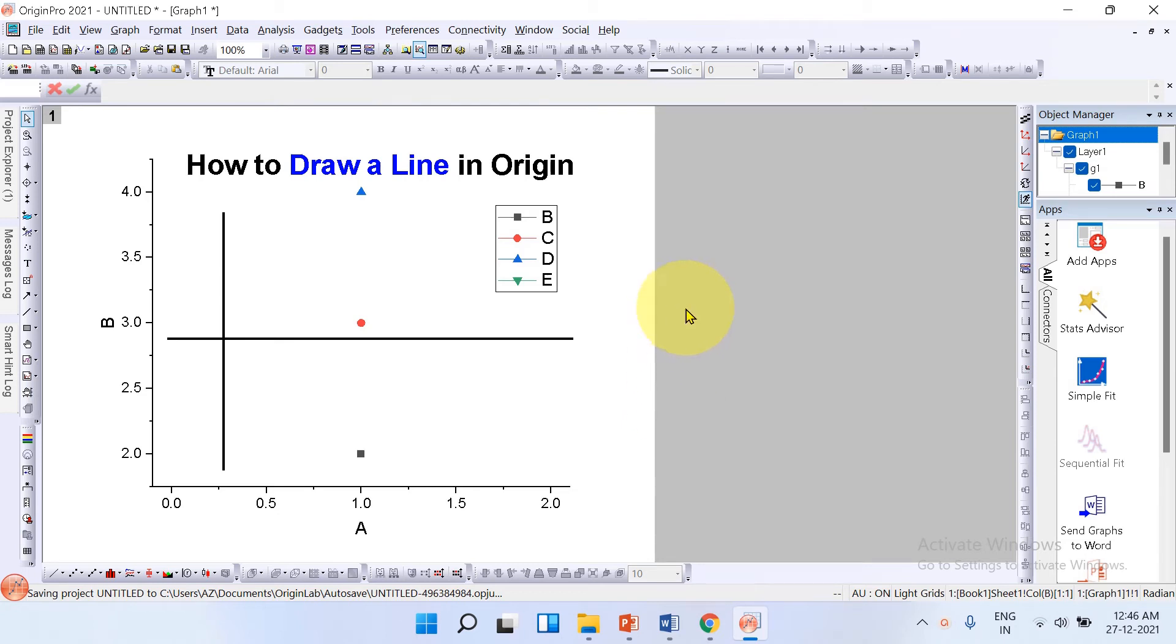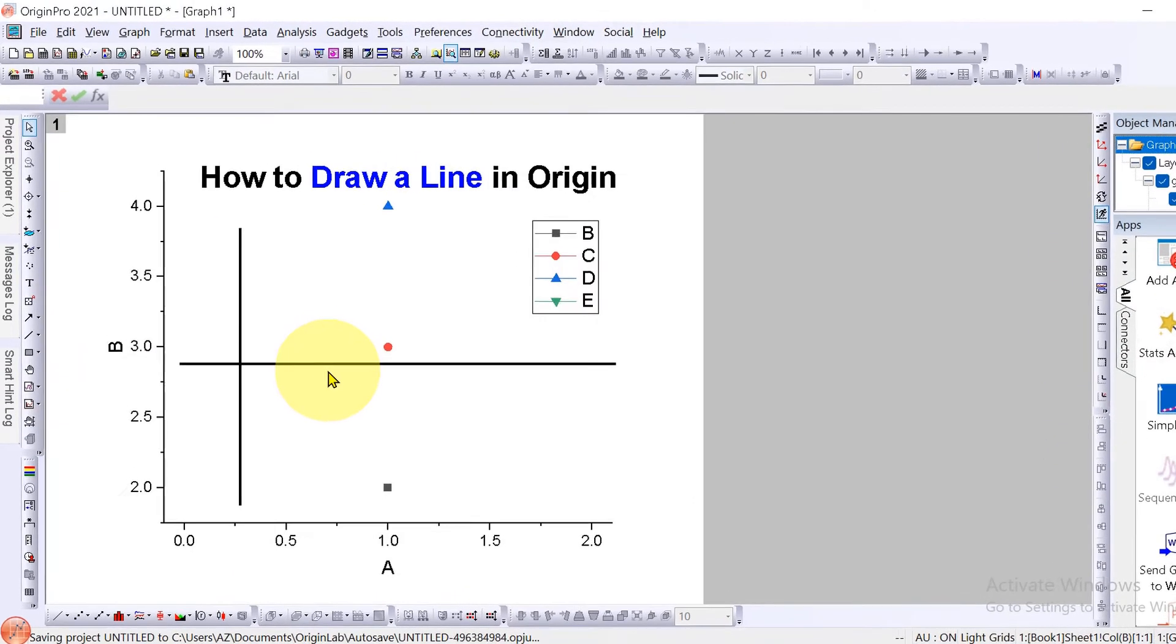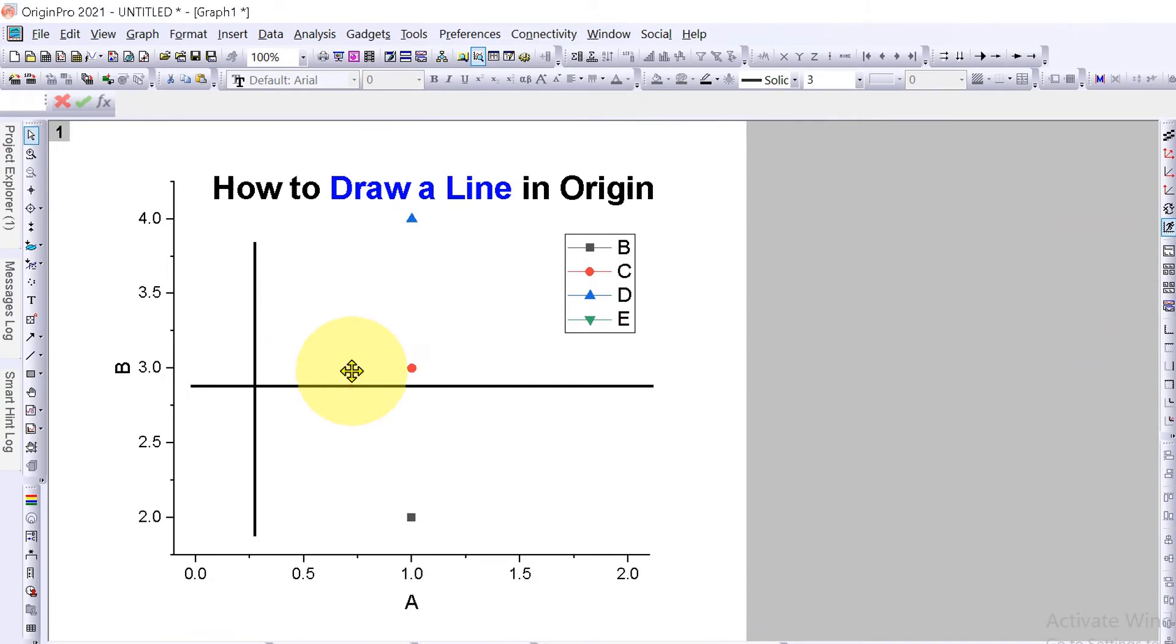In this video, you will see how to draw a line in Origin graph. As you can see, I have drawn horizontal and vertical lines, and you can also click on the line and move it anywhere freely inside the Origin software on your graph.